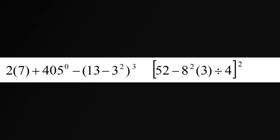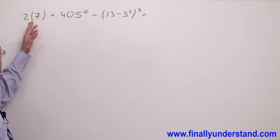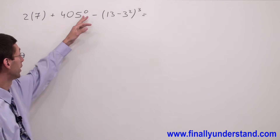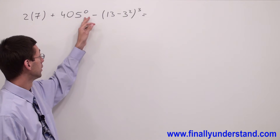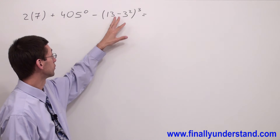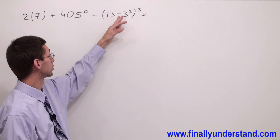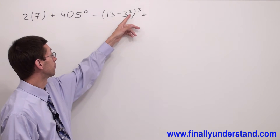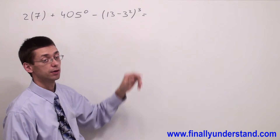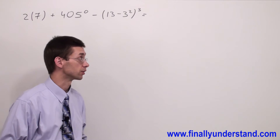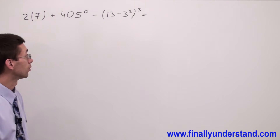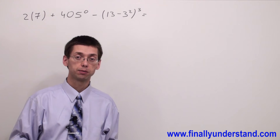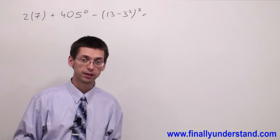Let's take a look at this example. In this problem we have the following operations: multiplication, addition, power, parentheses — inside of the parenthesis we have subtraction — we also have subtraction over here, and we have power outside of the parenthesis. So I'm going to solve this problem step by step.